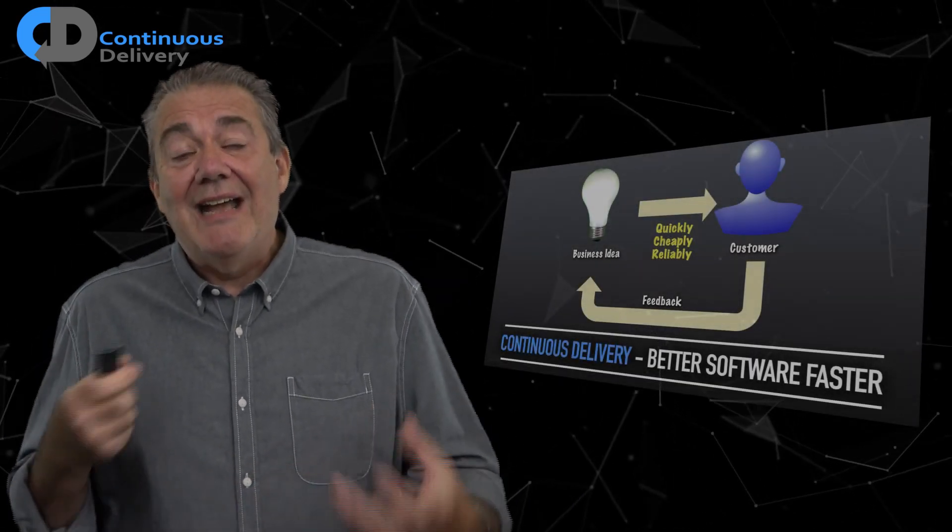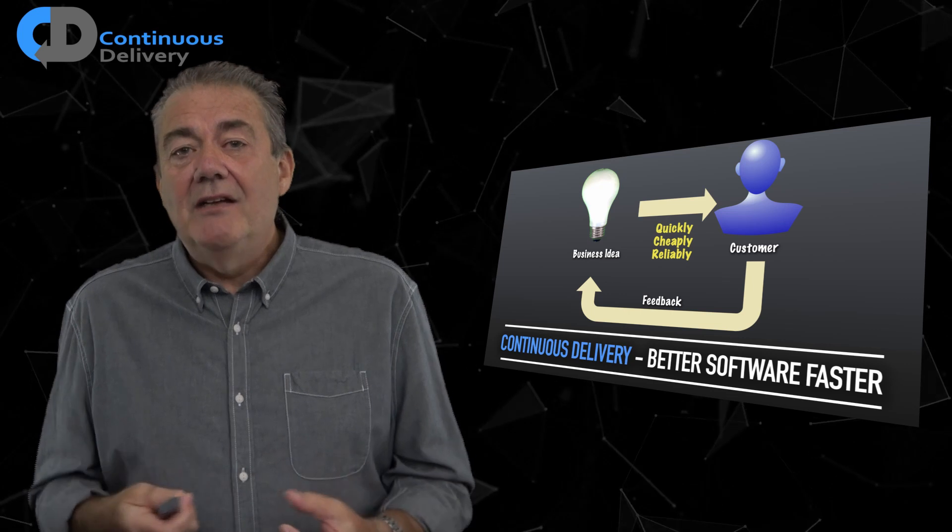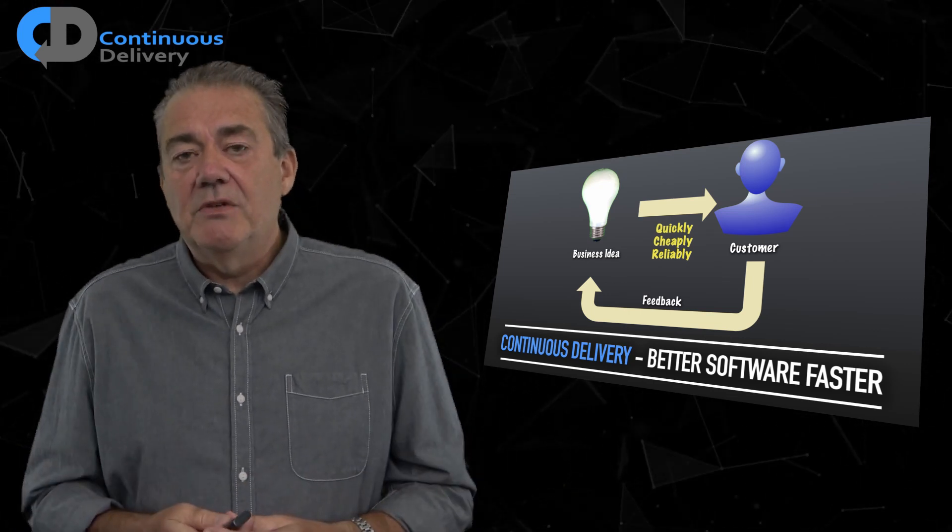The first eight of my rules are purely continuous integration related. I would recommend that you adopt these wherever and whenever you practice continuous integration, whether that's in the context of continuous delivery or not. The last two are a little bit more specific to working with a continuous delivery deployment pipeline, but they follow on from the continuous integration practices already described. If you'd like to learn more about how continuous delivery works, check out my training course, Better Software Faster — there are links in the description below.